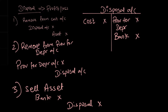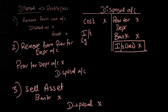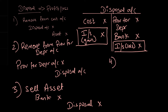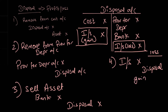Now you will balance this account to find the gain or loss. If it's a loss you will transfer this to the income statement — the loss comes on the credit side. If it's a gain it should come on the debit side. In the case of a loss, it goes to the income statement as an expense: income statement is debited and disposal is credited. If it's a gain then it should be credited in the income statement account and the disposal account is debited.